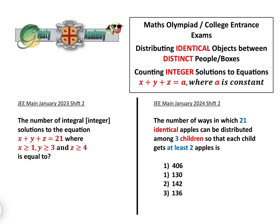The number of ways in which 21 identical apples can be distributed among three children so each child gets at least two apples. This is an example of distributing identical objects between distinct people and boxes.